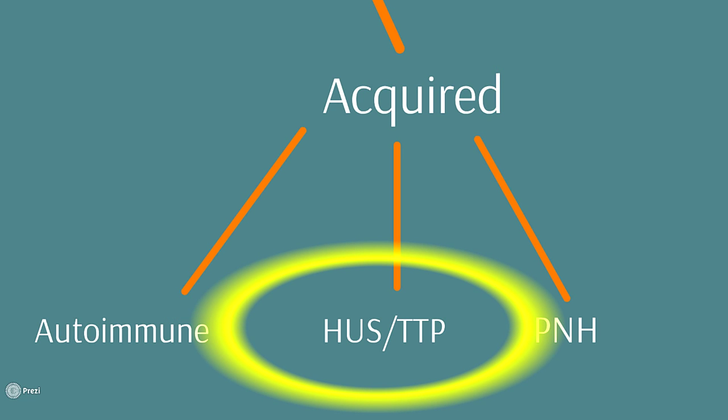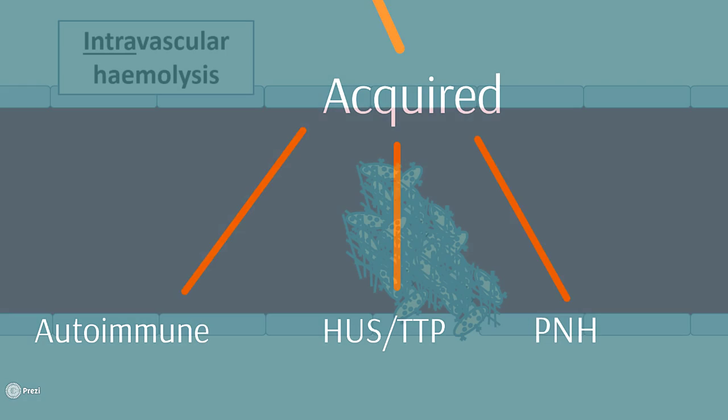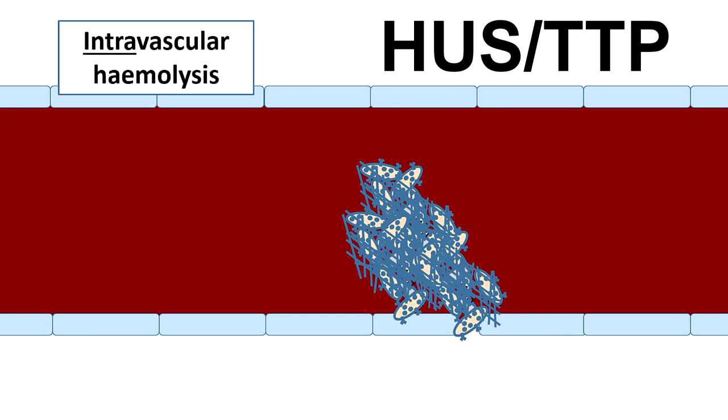Okay this one's a bit more difficult, so HUS and TTP are two related diseases. In both cases there's a problem with the blood vessel wall which causes the platelets to activate and stick together across the blood vessel. Now the red blood cells which are whizzing through the blood vessel can sort of smash into the platelets causing them to break apart into different fragments and that's an example of an intravascular hemolytic anemia.